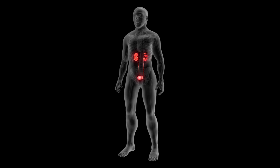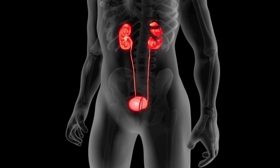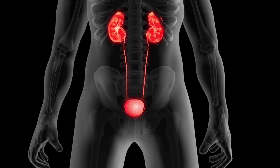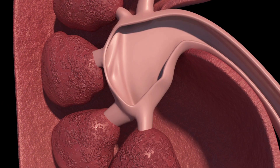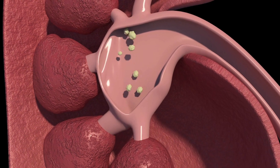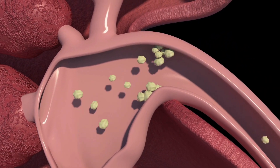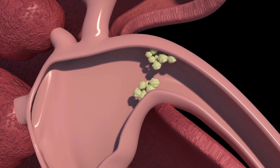Kidney stones are small, hard deposits of minerals and acid salts that form inside the kidneys. They can vary in size and shape, ranging from a grain of sand to a pea-sized stone or even larger.